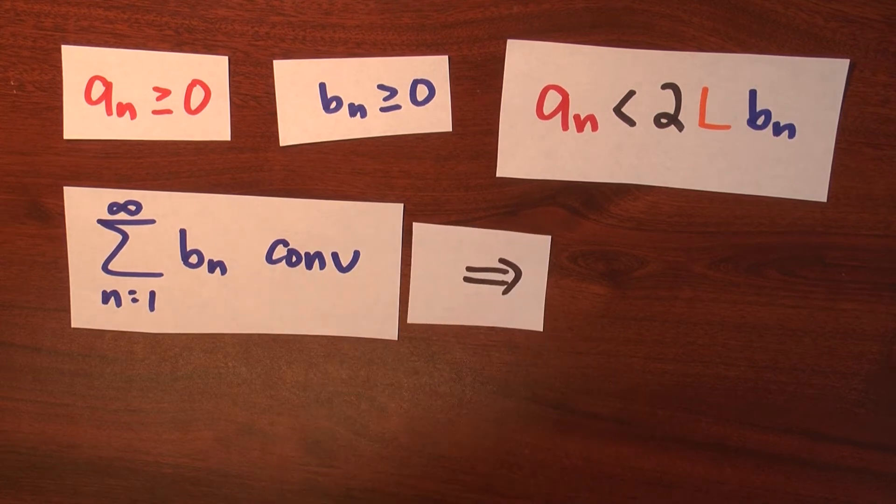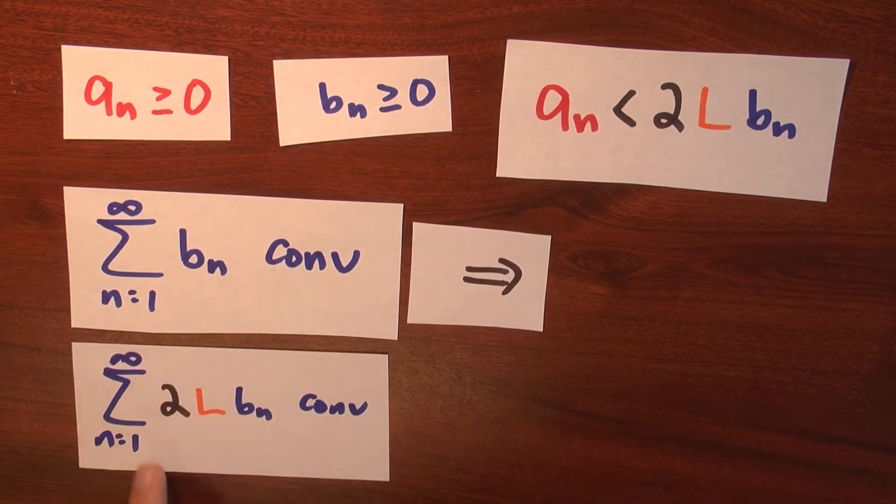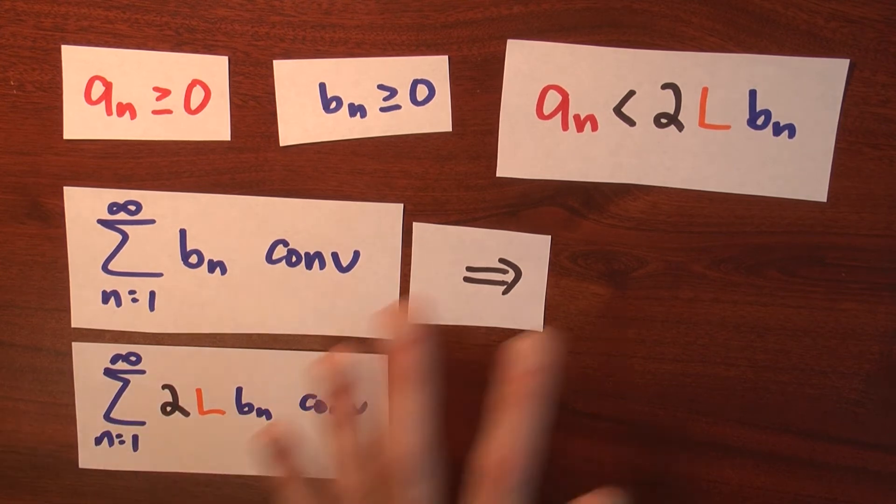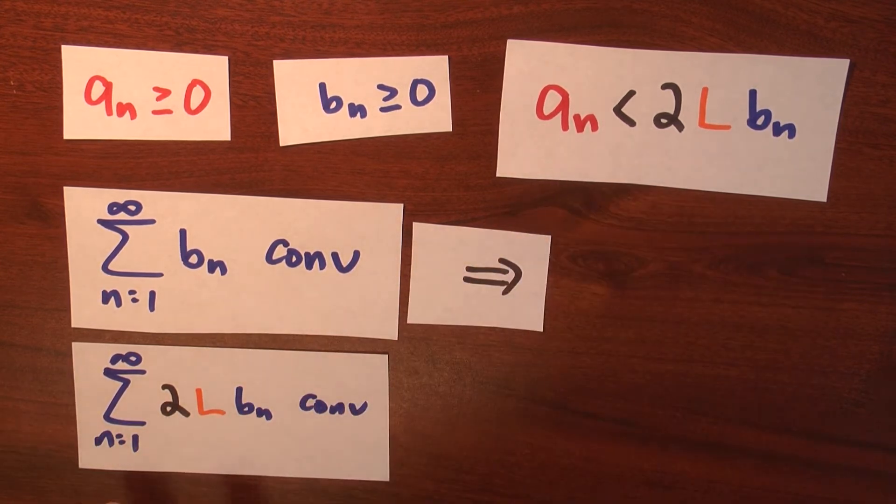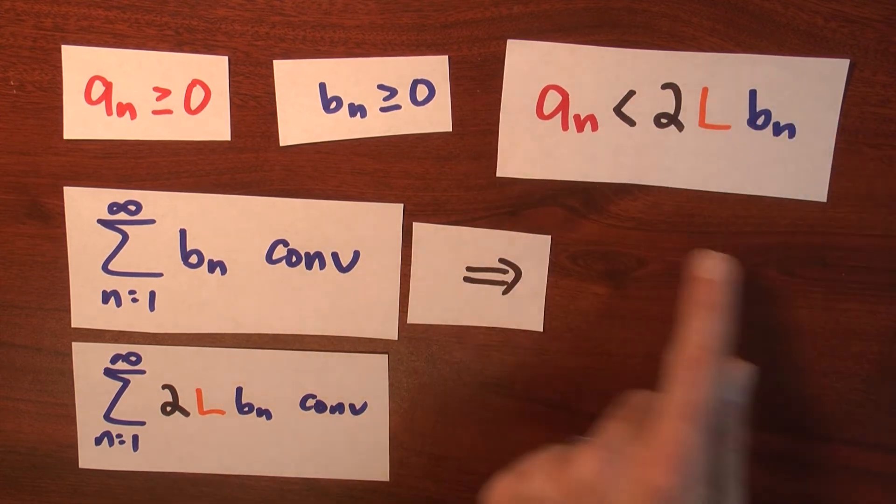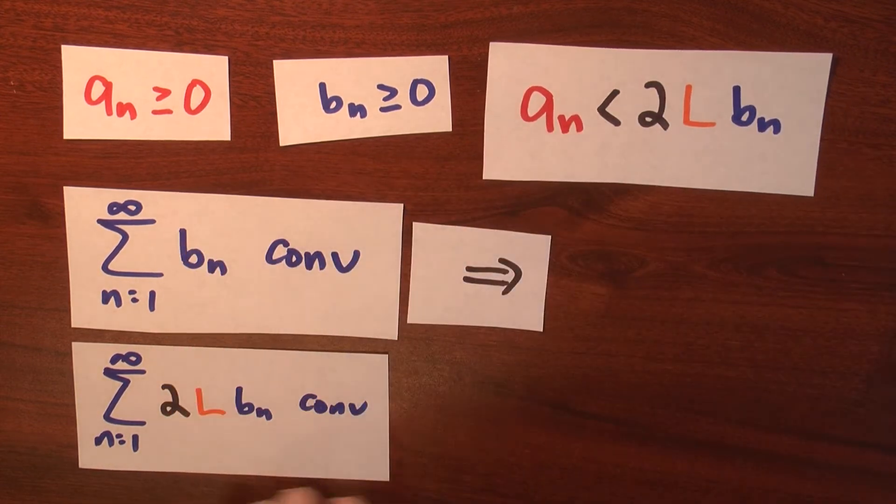Suppose that I knew that this series, the sum little n goes from 1 to infinity of b sub n converged. Then I would know that this series, the sum little n goes from 1 to infinity of 2Lb sub n also converges. I can multiply a convergent series just by some number. But now I'm in a position to apply the comparison test. Granted, this statement's only true for large values of little n, but that's okay, because convergence only depends on the tail.